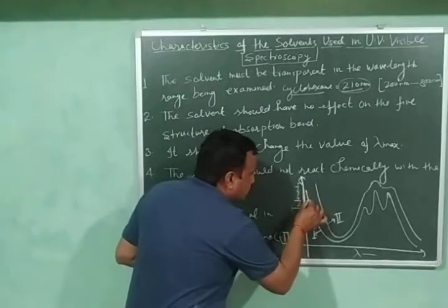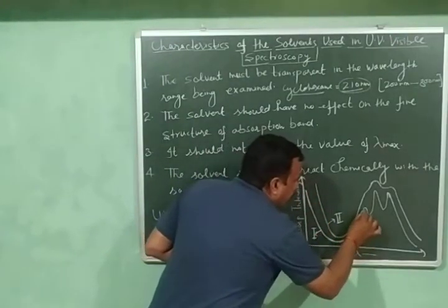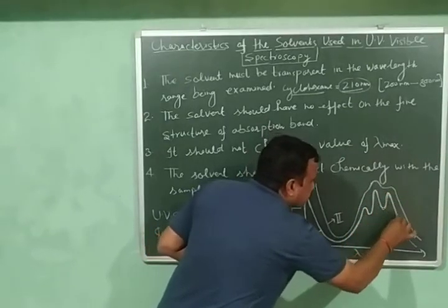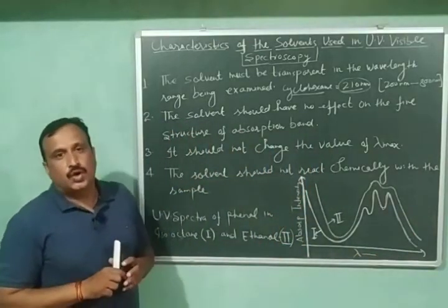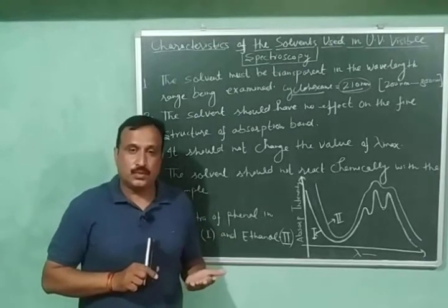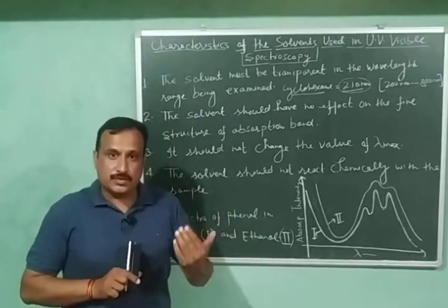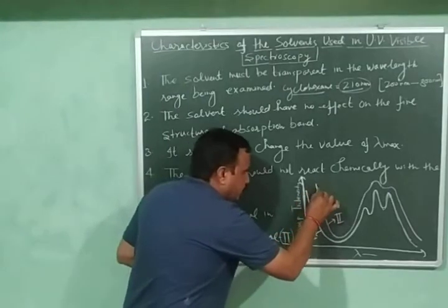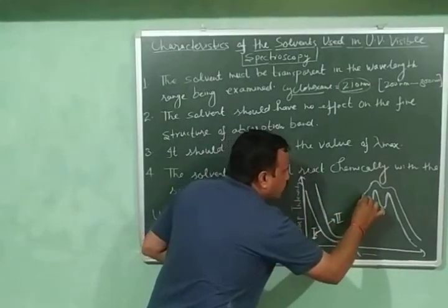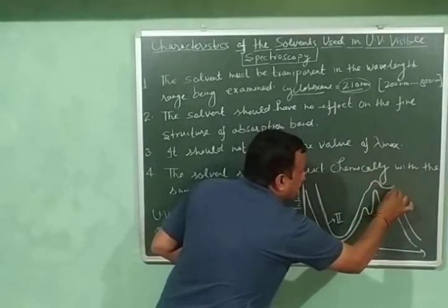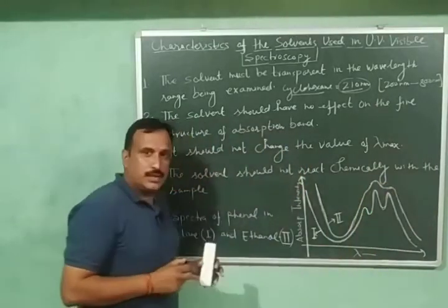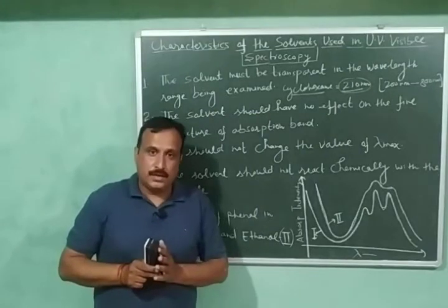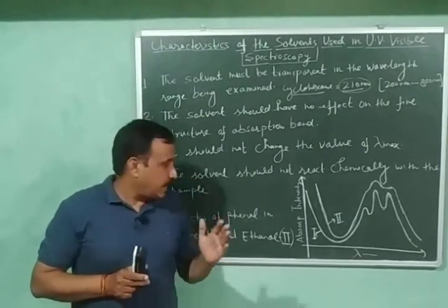So you can see that this is the spectrum of phenol in isooctane. And this spectrum is having very well defined peaks and sharp peaks. So this is the very fine spectrum of phenol in isooctane. And when we recorded this spectrum of phenol in ethanol, then we have this spectrum number two. And you can see that in this spectrum, we don't have very sharp peaks. We have broad peaks. So in isooctane, we obtain a very fine spectrum. So the isooctane is a good solvent as compared to ethanol.